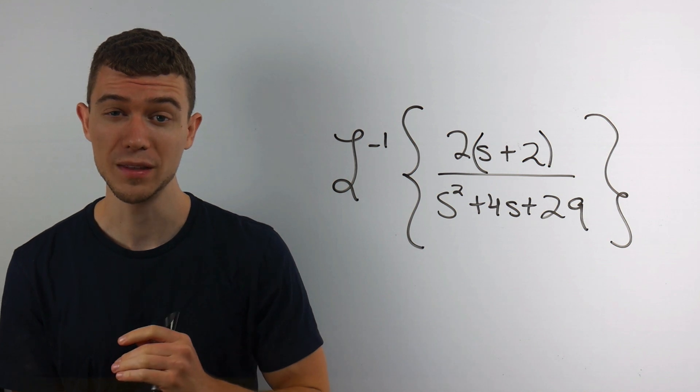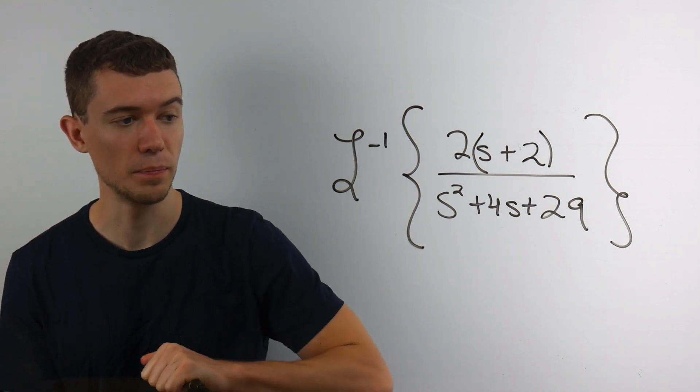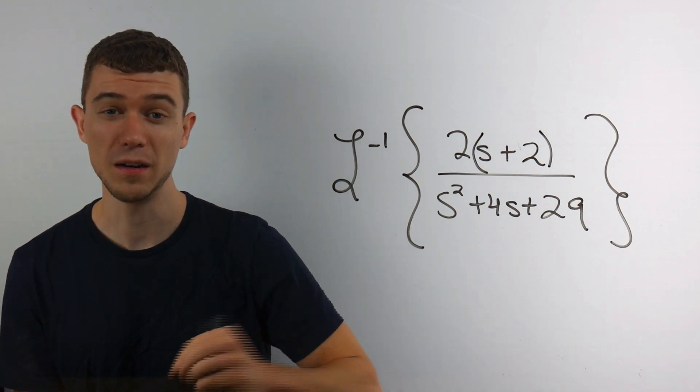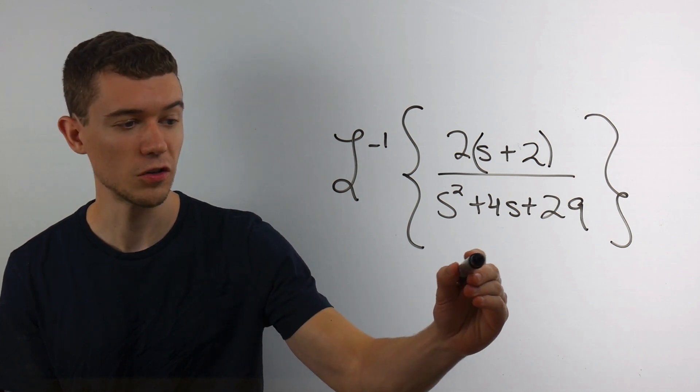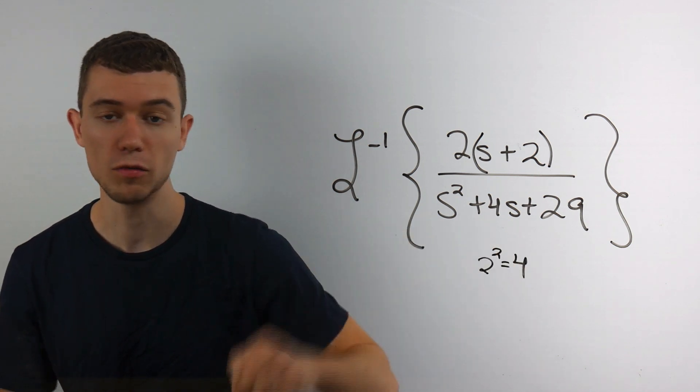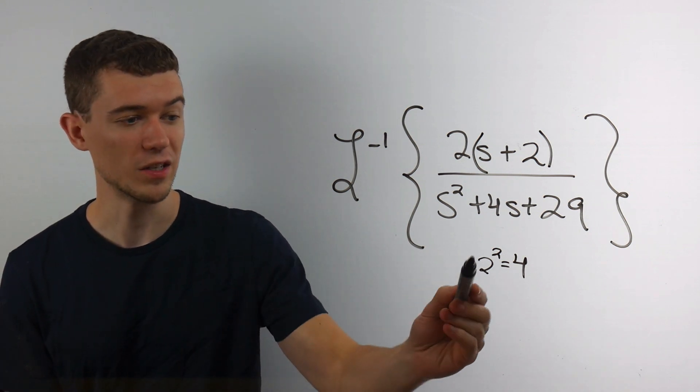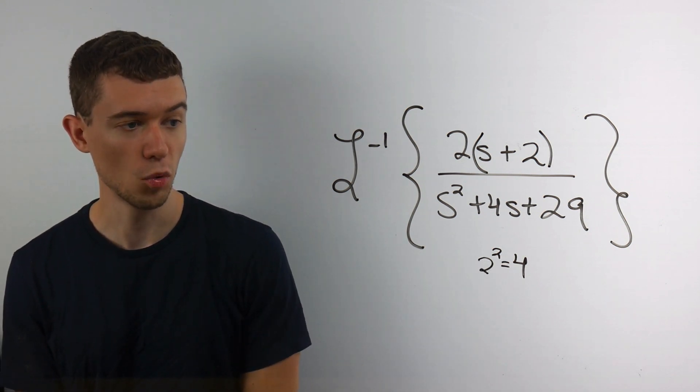I'll remind you how to complete the square. We take half of the b term, b being 4 in this case, half of it is 2, and we square it. We're completing the square, so we square to get 4.